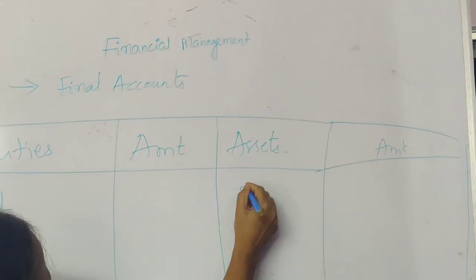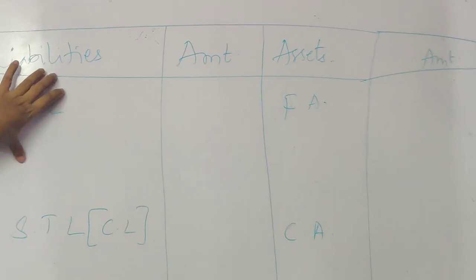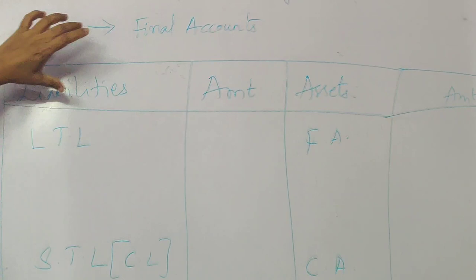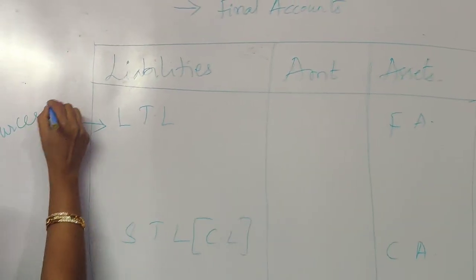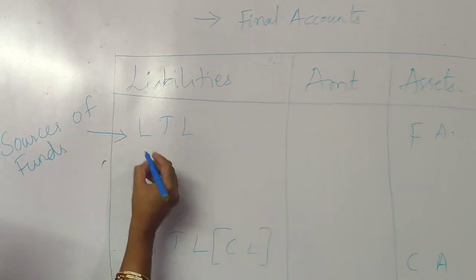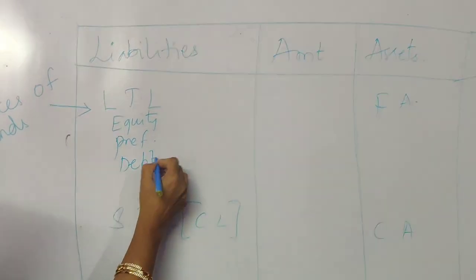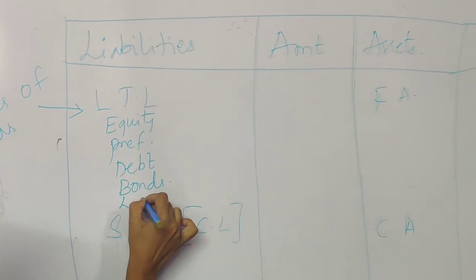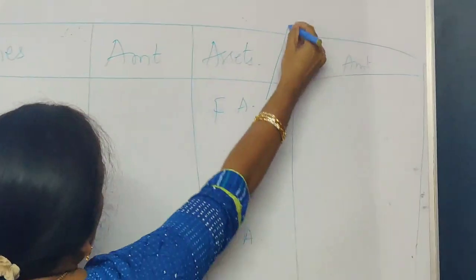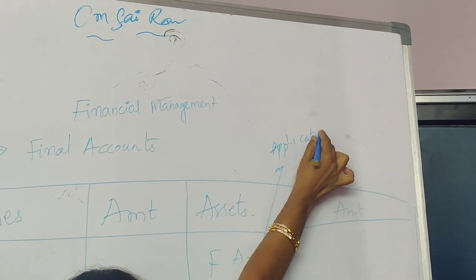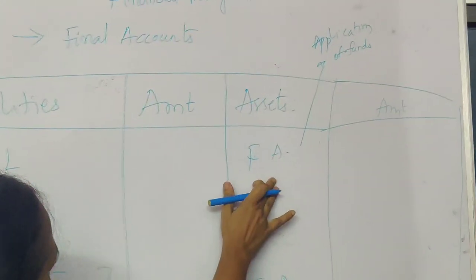On the assets side we have fixed assets and current assets. Now, based upon this balance sheet, what we are going to learn in financial management: long-term liabilities are the sources of funds — equity capital, preference capital, debt, bonds, long-term loans, etc. When it comes to fixed assets, we consider them as application of funds.